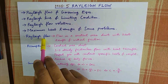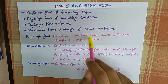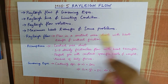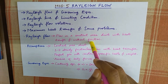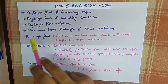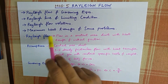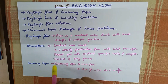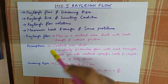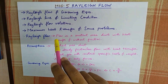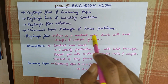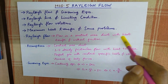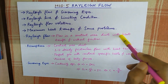What is Rayleigh Flow? Rayleigh Flow is flow in a constant area duct with heat transfer and without friction. In the previous module, we studied Fanno Flow, which is flow in a constant area duct with friction and without heat transfer.